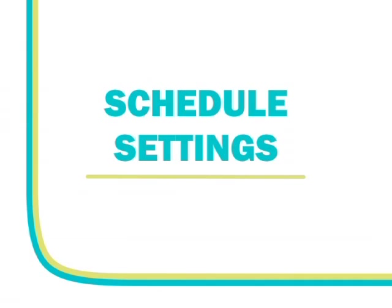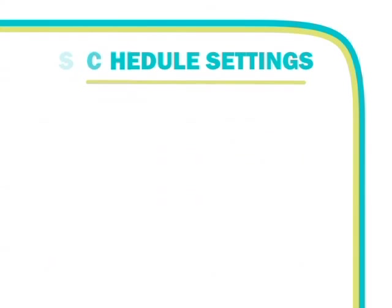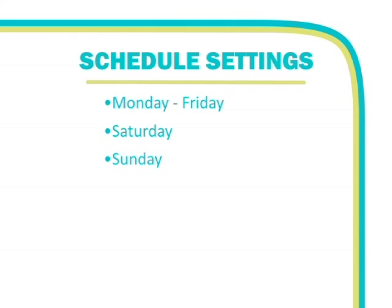The smart thermostat allows you to schedule different temperature settings for different days and times depending on your schedule to maximize energy savings. It allows customers to set different temperature settings for up to four different time periods for Monday through Friday, Saturday, and Sunday. The four time periods for these day settings are wake, leave, return, and sleep.